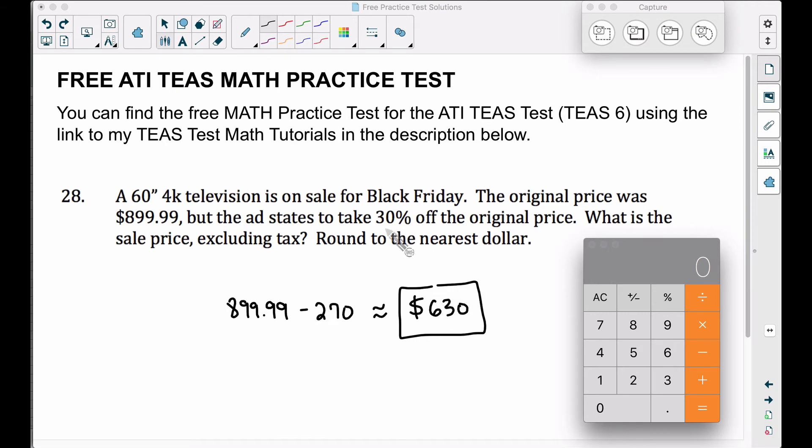Now think about it this way. If you're getting 30% off the original price, that leaves you paying the remaining 70% because 30% and 70% give you a hundred percent. So what you could do instead, you can take 70% of the sale price and check out what we get. $629.99, pretty much 630 bucks. And again, I'm rounding to the nearest dollar. So that was one step instead of two steps.